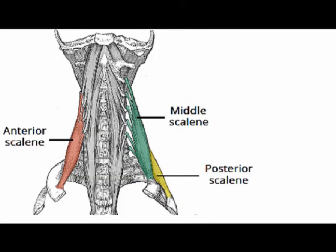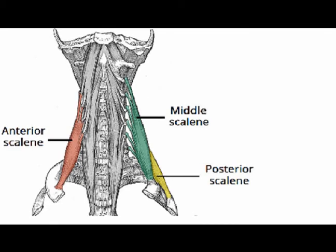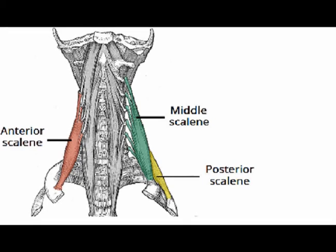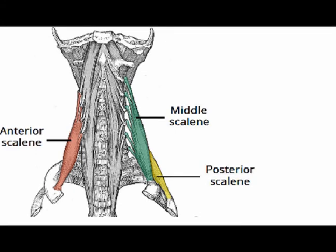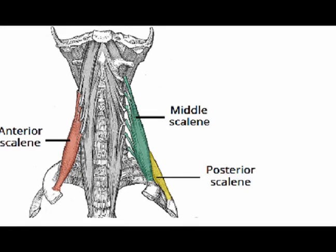The posterior scalenes are also known as the scalenus posterior. They are the deepest and the smallest of the three scalene muscles. They originate on the posterior tubercle of the transverse process of cervical vertebrae C5, C6, and C7. They insert onto the second rib. They are innervated by the anterior rami of C6, C7, and C8.